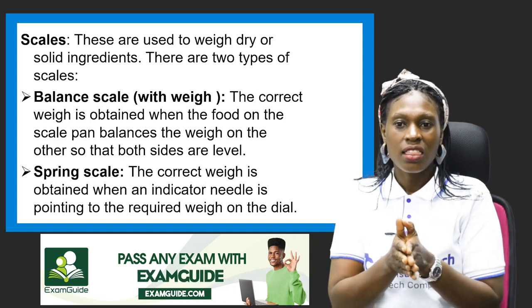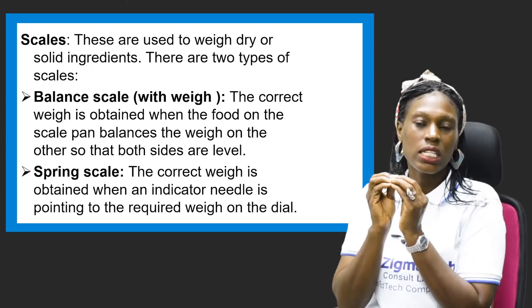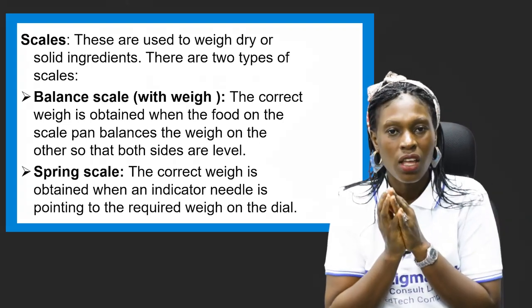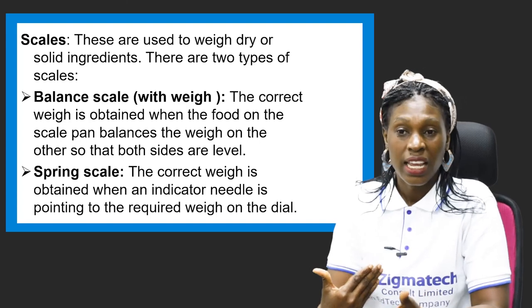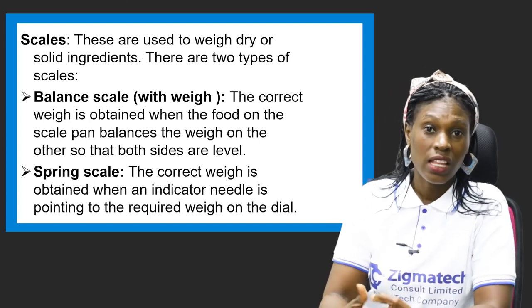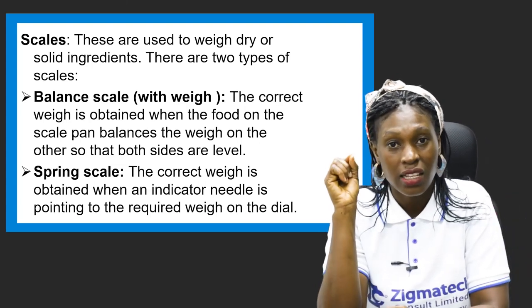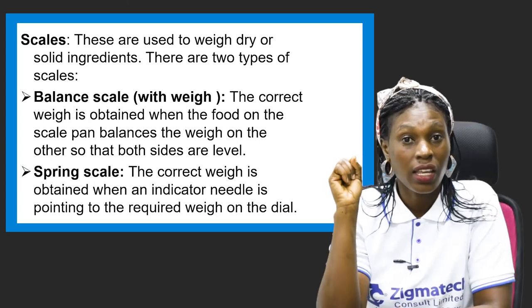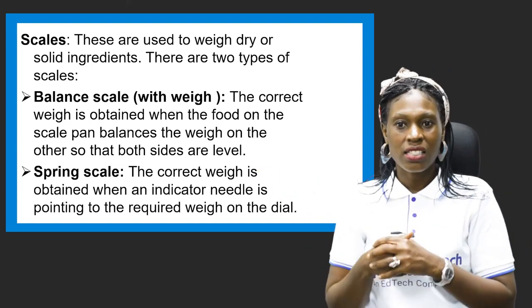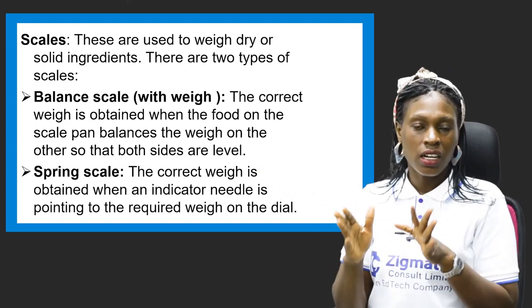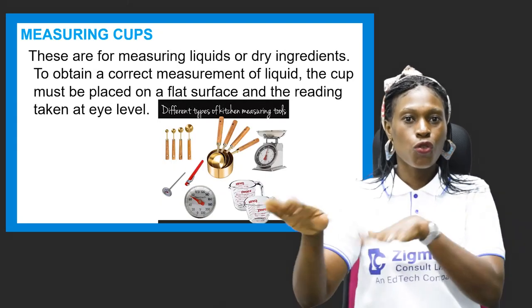The second type is the spring scale. The correct weight is obtained when an indicator needle points to the required weight on the dial. For example, if you want one kilogram of butter, fat, or sugar, you place it on top and it points to the kg mark — that means you have an accurate measurement. So we have the balance scale and the spring scale.